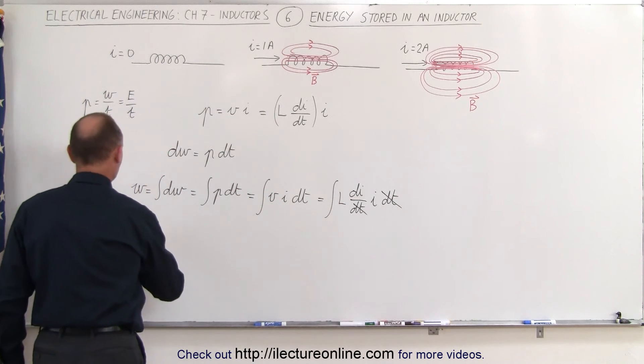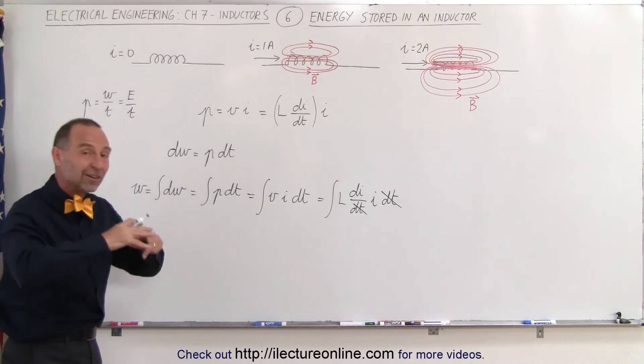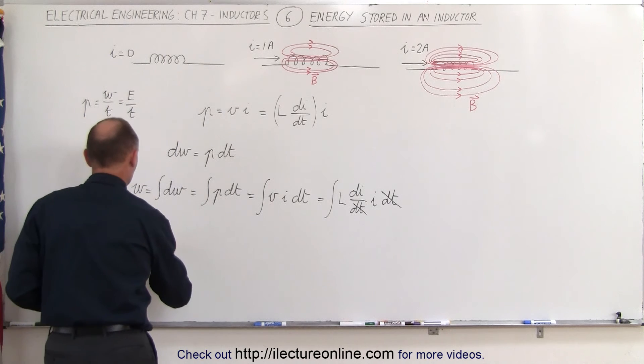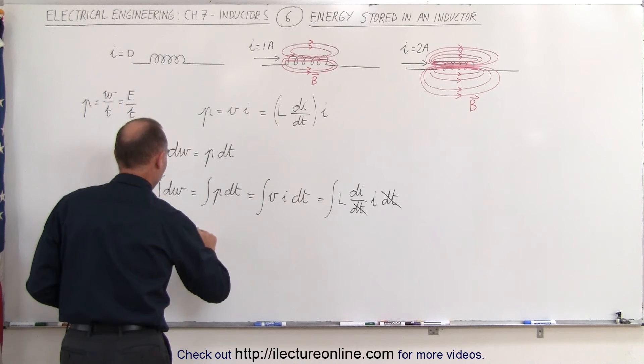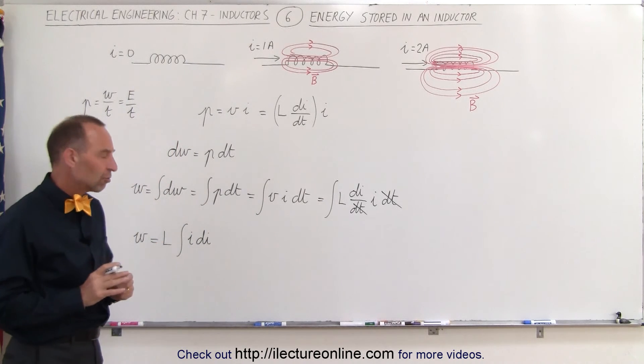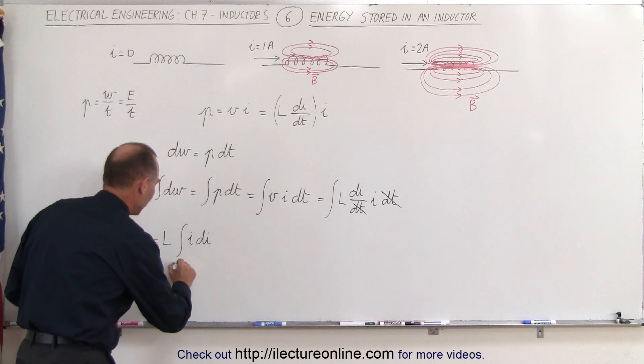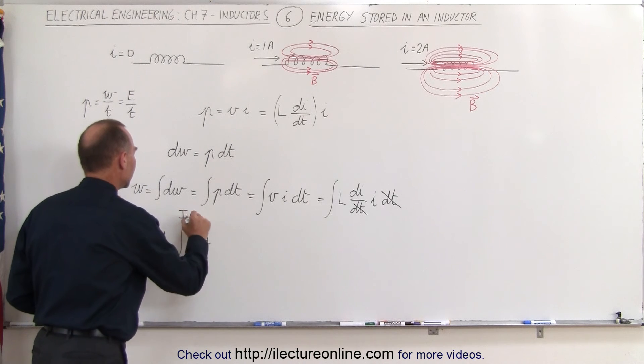So this can then be written as the amount of work done, which is equal to the amount of energy stored in the inductor, is equal to the inductance times the integral of I times dI. And the limits of integration is we start with zero current and we finally reach the final current in the inductor.